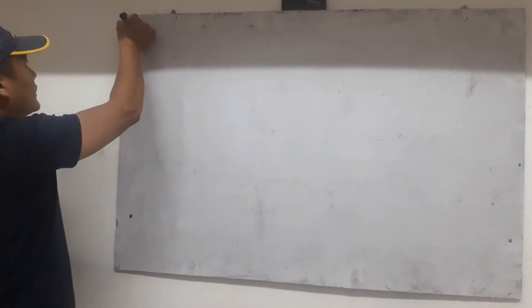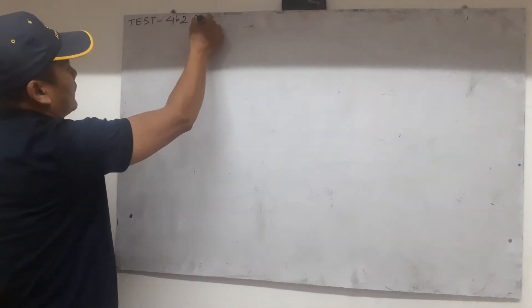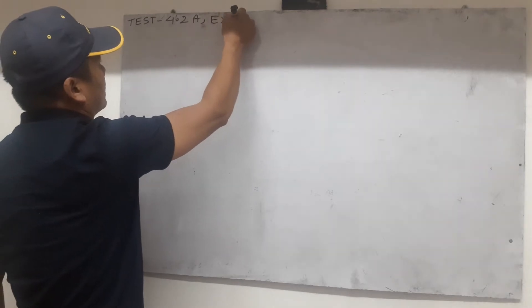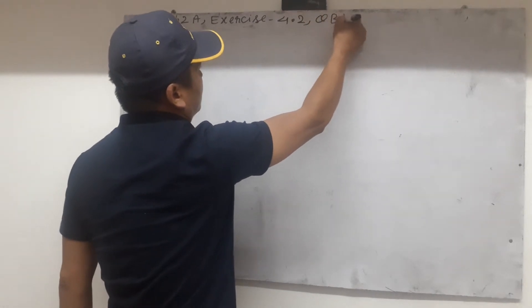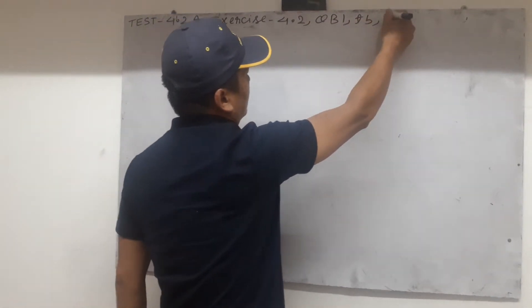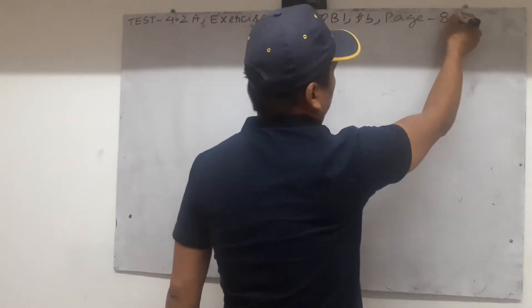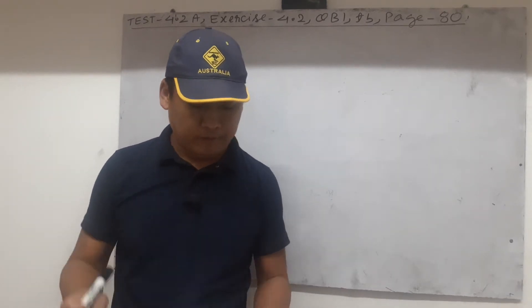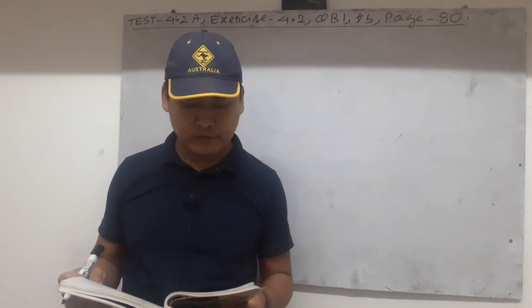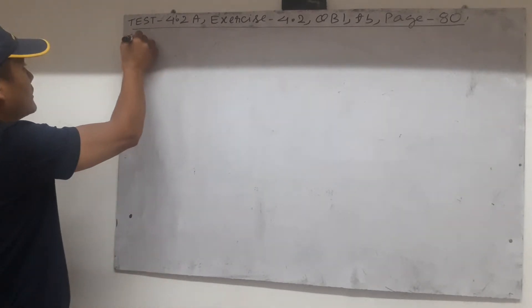So the next test here. Test 4.2a. This is under our exercise 4.2, Question B1. We'll find it on page 80, so open your textbook to page 80 and we'll start. Let me read the question once: find the roots of the following quadratic equations by factorization. So we're going to start solving quadratic equations by the first algebraic method, that is by factorization.